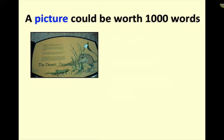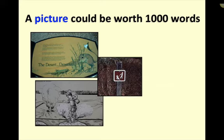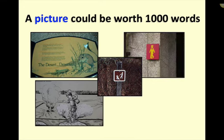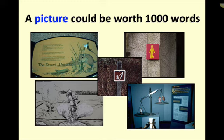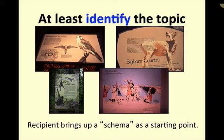A picture could be worth a thousand words — that's kind of what that phrase means. Looking at a sign with a lizard, a kangaroo rat, a plant, and authentic bird droppings, you come to the conclusion that the desert is not deserted — that's the message. Looking at another picture, you know that you can fall through thin crust, encounter something really hot, and it doesn't look like much fun — that's the Yellowstone message. Dogs on leash. This is the men's bathroom. In all these cases, the message is being sent visually. Even if you can't give the whole message visually, you can at least identify the topic, which allows the recipient to bring up a schema as a starting point.